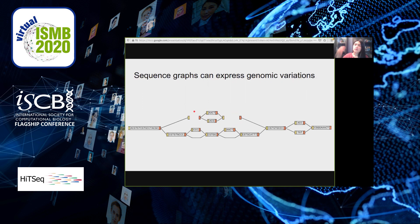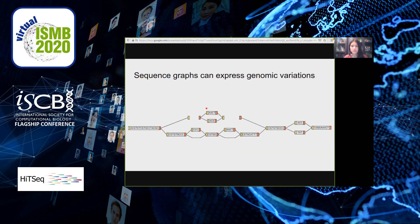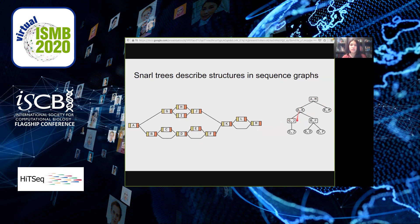Snarls commonly occur contiguously with each other with a shared boundary node between them, and a sequence of these contiguous snarls is what we call a chain. A chain that has only one snarl is called a trivial chain. These chains can be nested within parent snarls, and we describe the nested organization of snarls and chains as a structure called a snarl tree.